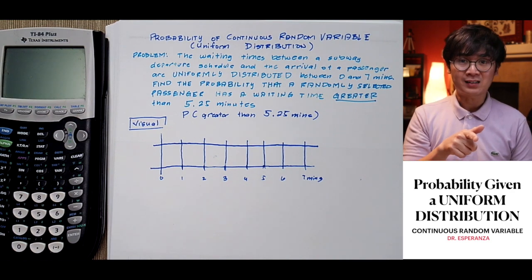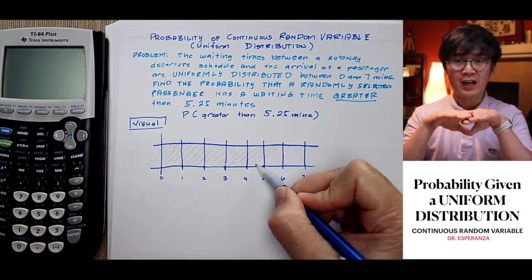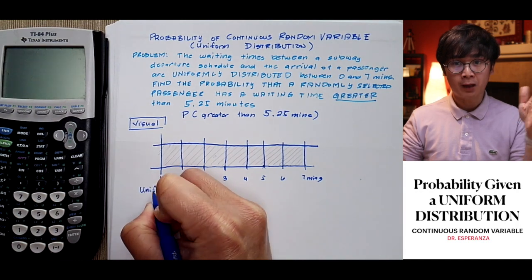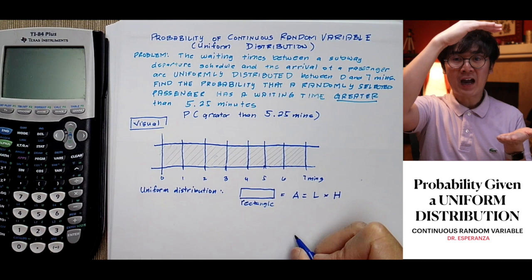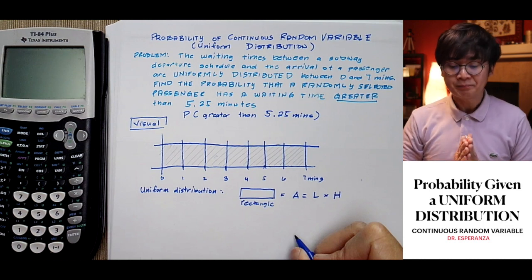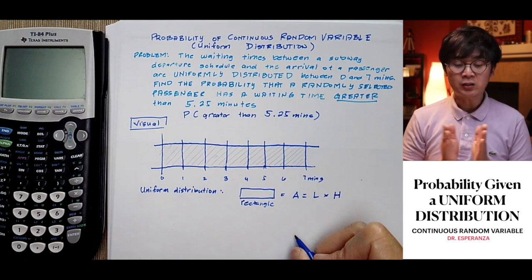The x-axis represents time in minutes, and the vertical axis is what we'll find later. In visualizing this for 7 minutes,